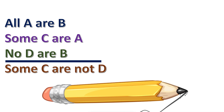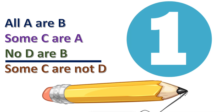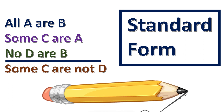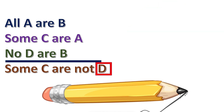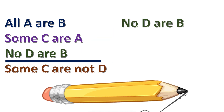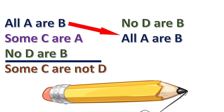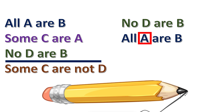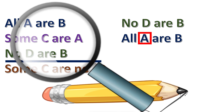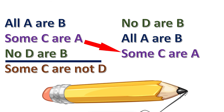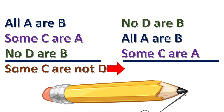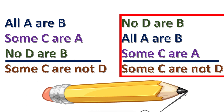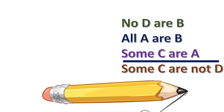Here's an example. The first step is to put it into standard form. First, identify the predicate of the conclusion, then find the premise that has that term. Write that premise first, then identify the other term in the same premise, find the next premise that contains that term, and write it second. Now look at the other term in the second premise, find the premise that has this term, and write it below the second premise. Finally, write the conclusion last. Now the new sorites is in standard form.